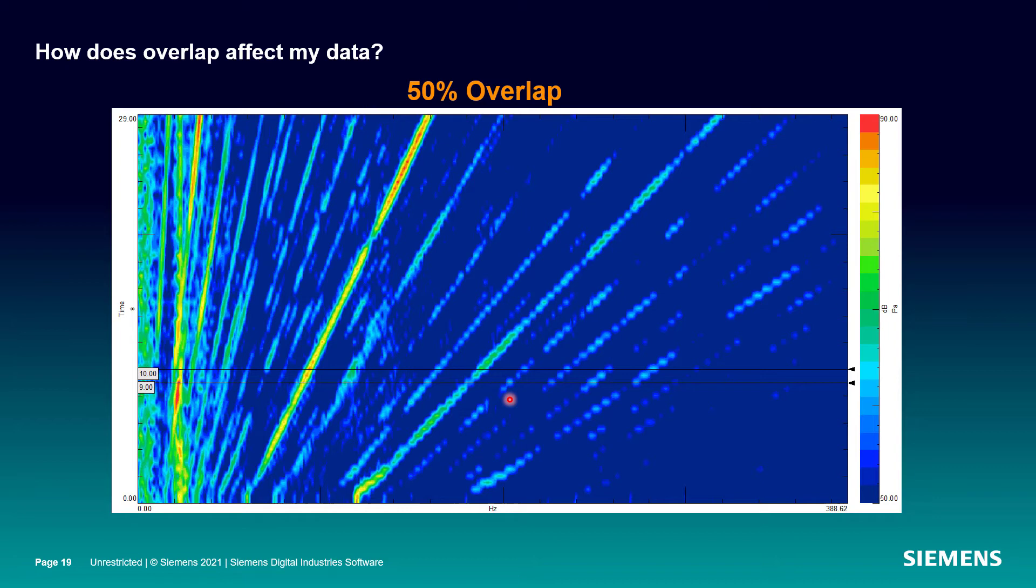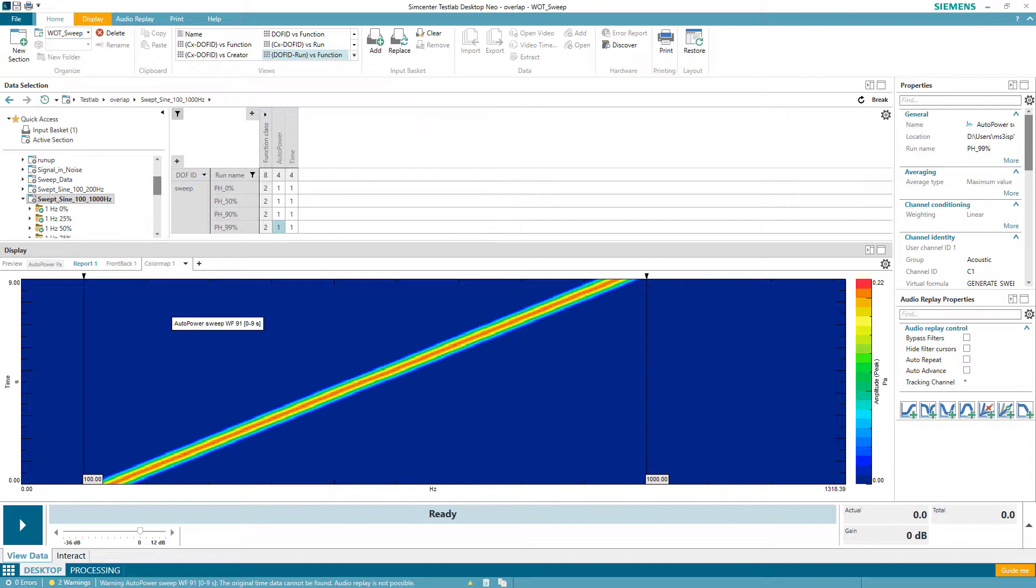So this is that same color map. This is 50% overlap. And you see, the amount of dots has increased here because I've got twice as many peaks in my windows here. And so it's gotten much better. If I wanted to further improve this, I could increase that overlap and it would even further reduce the dot phenomenon.